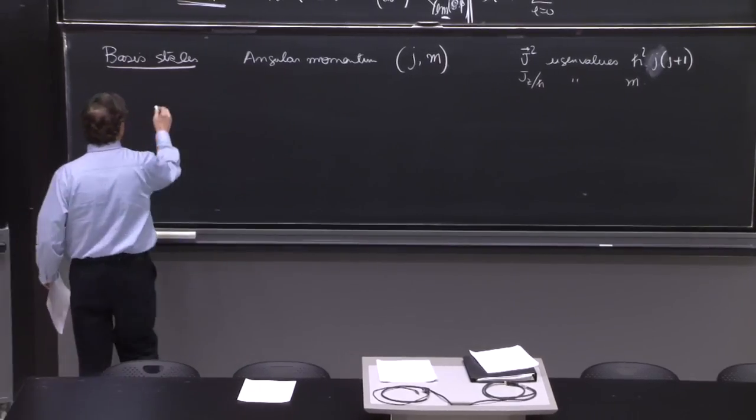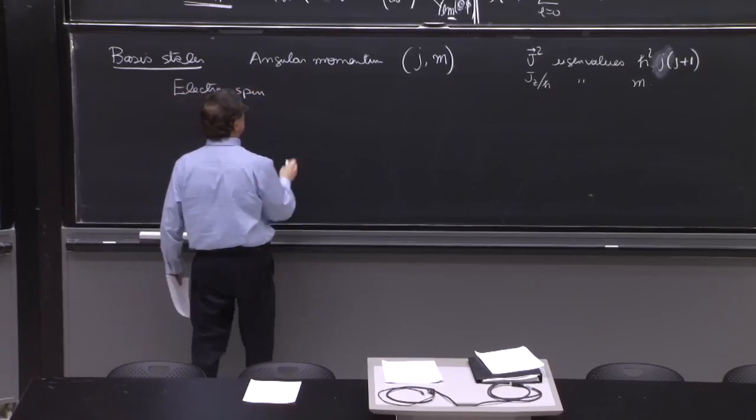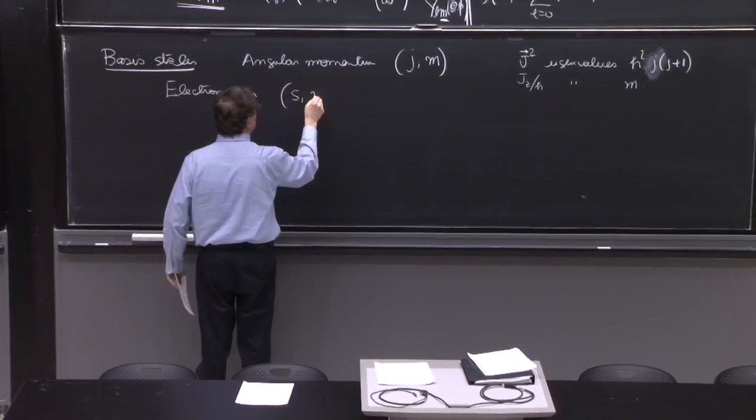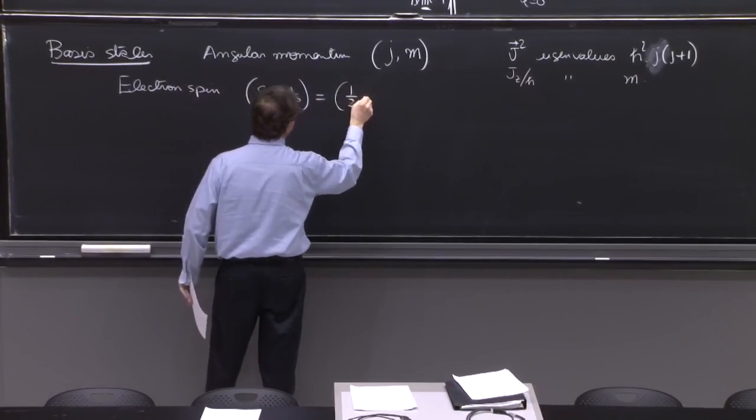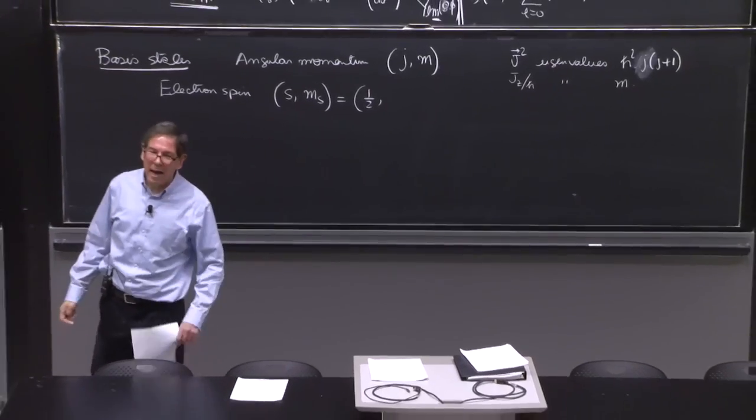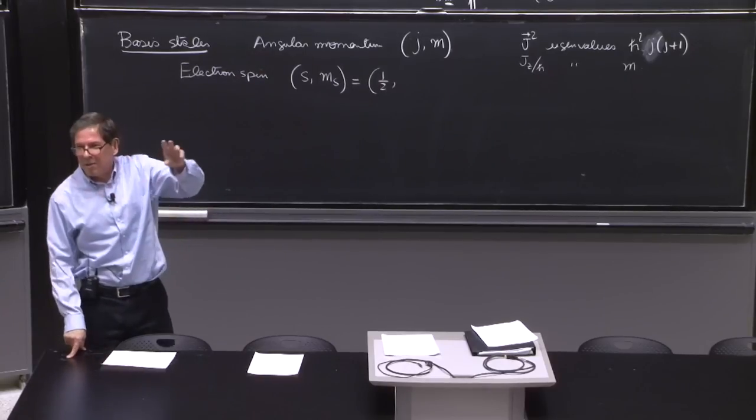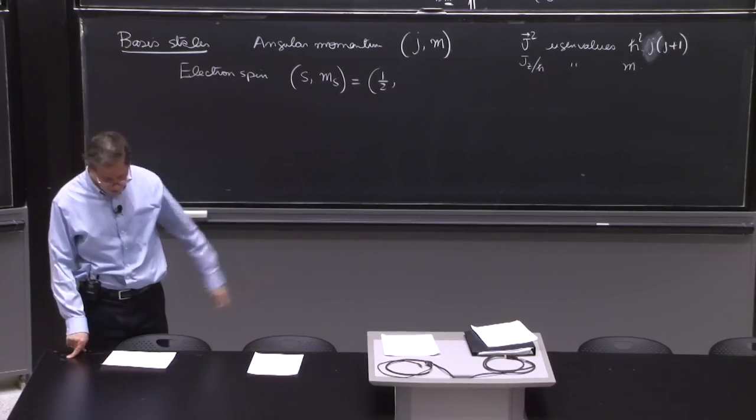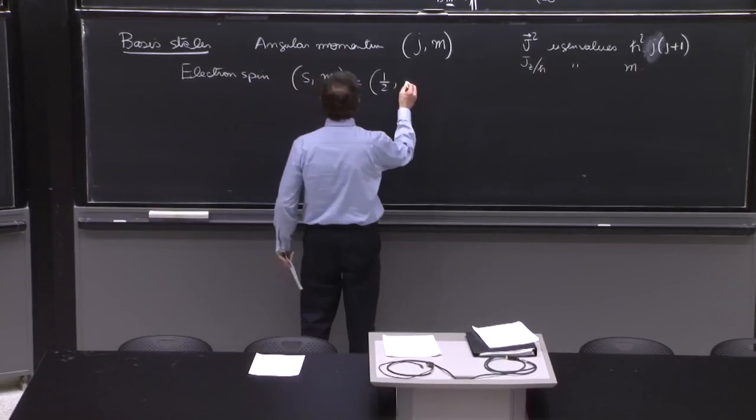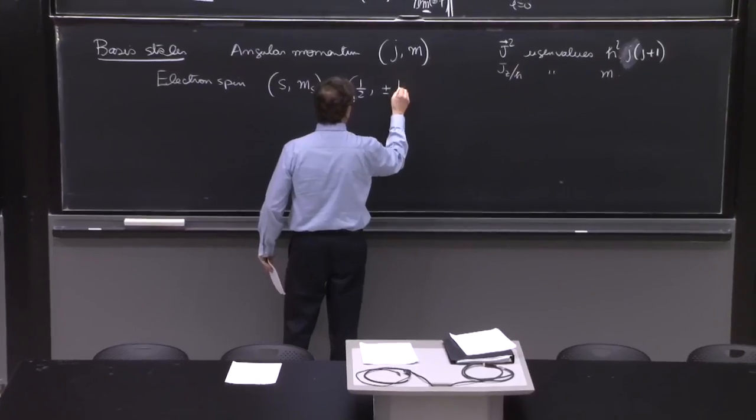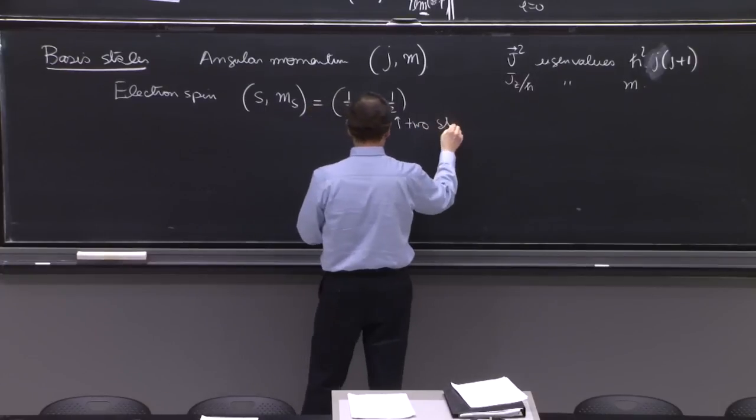So we have the electron spin. What is the notation? It's s, ms, and it's always equal to 1 half, because the electron always has spin 1 half. The electrons have many orbital angular momentum, 0, 1, 2, 3. But spin, it only has spin 1 half. So s is always 1 half. ms can be plus minus 1 half. So that's two states.